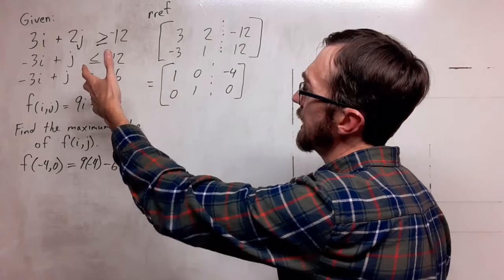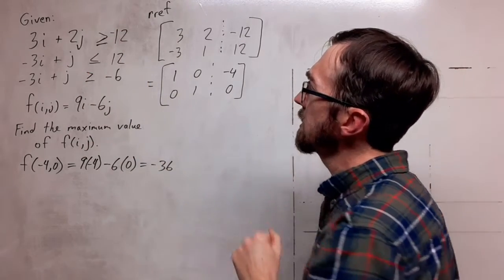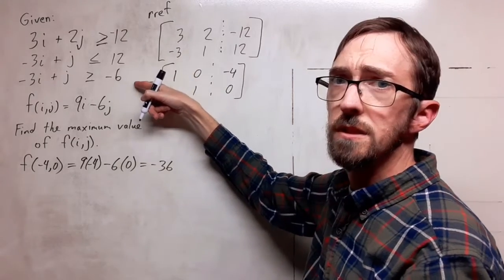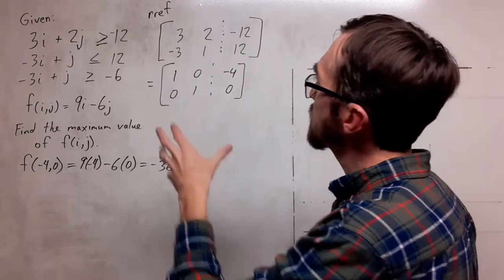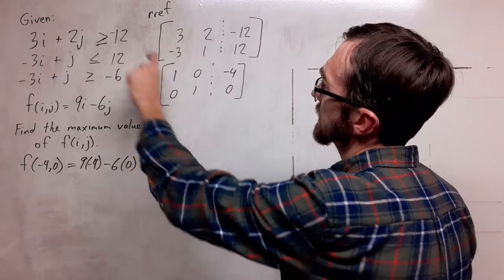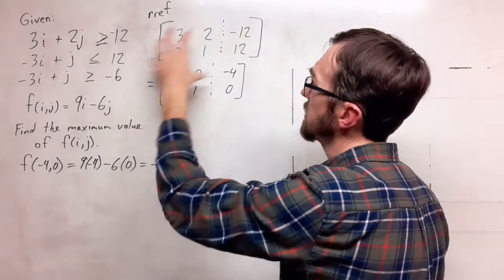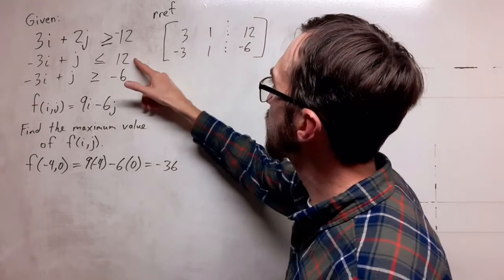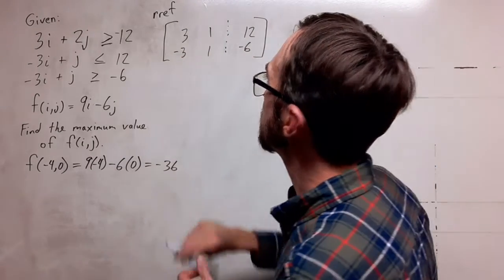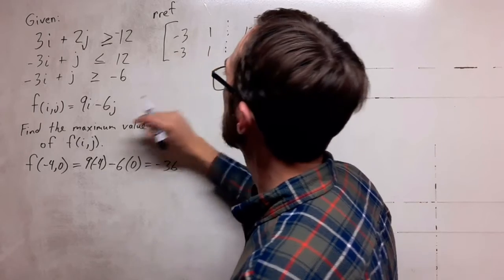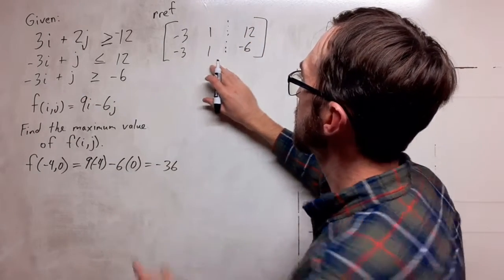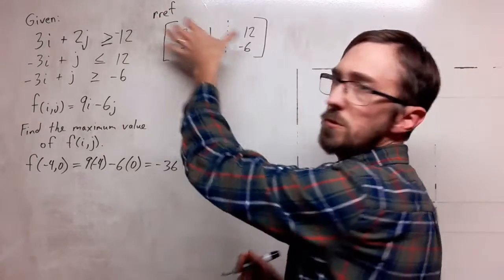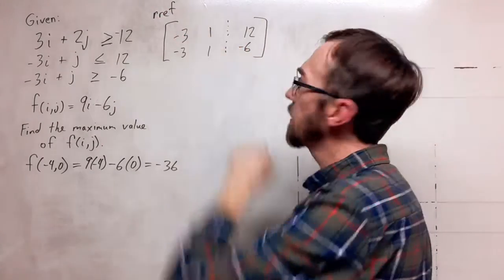I potentially have three other points here, as long as we have three intersections. So we are going to do the next set. I'll take the second two and create a matrix here. So I have 3, 1, 12 for this line, and then I'll have negative 3, 1, negative 6 for this second one. And again we're going to do the reduced row echelon form on that.